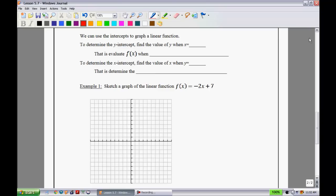To determine the y-intercept, find the value of y when x equals zero. If you just substitute zero in, you will always have the y-intercept. So you need to evaluate f(x) when x is equal to zero, or you can think of it as f(0). When you're looking for the x-intercept, you substitute zero in for the opposite thing. So I'm going to substitute zero in for y. That is to determine the value of x when f(x) equals zero.